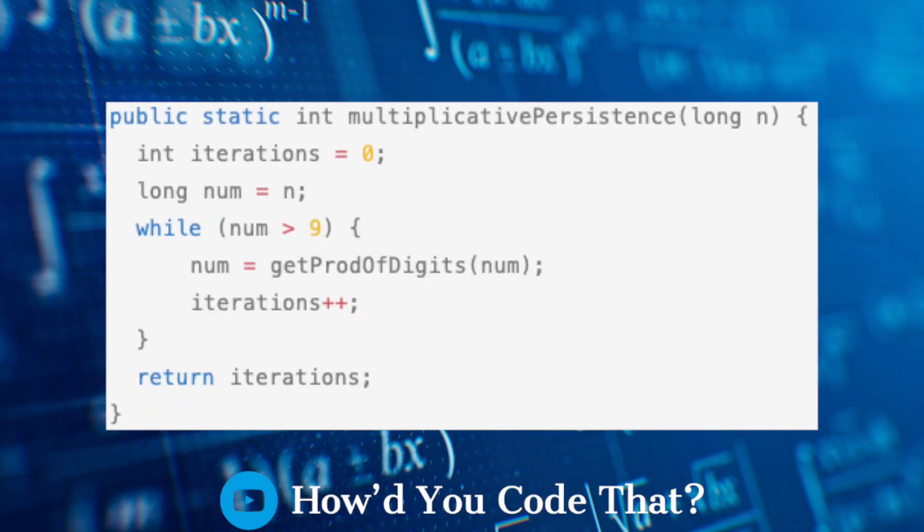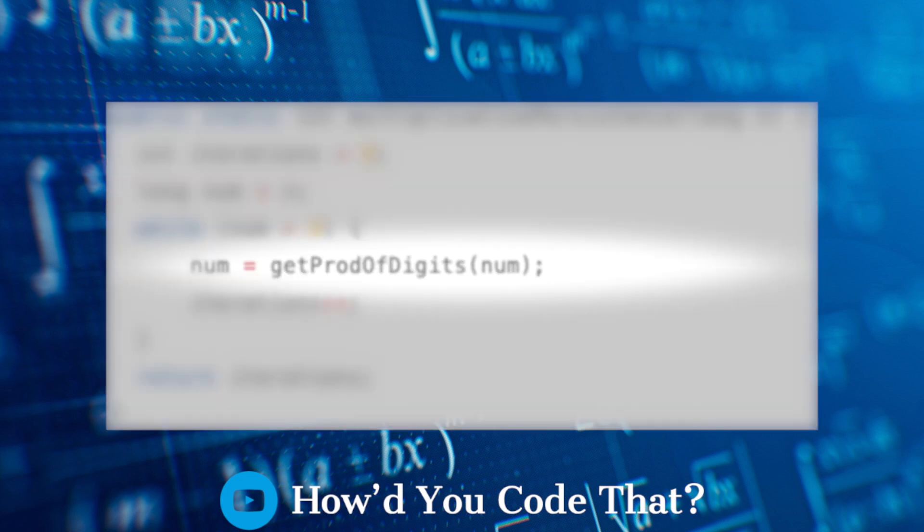The solution to the multiplicative persistence method is identical to that of the additive persistence method, with exception of the call to the helper method, getProductDigits.